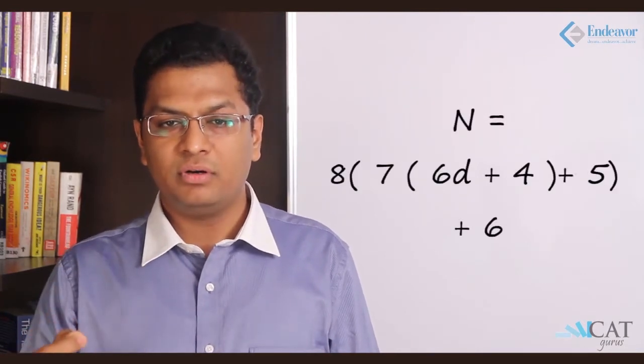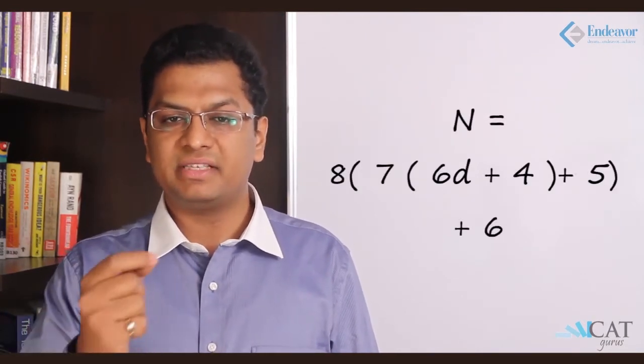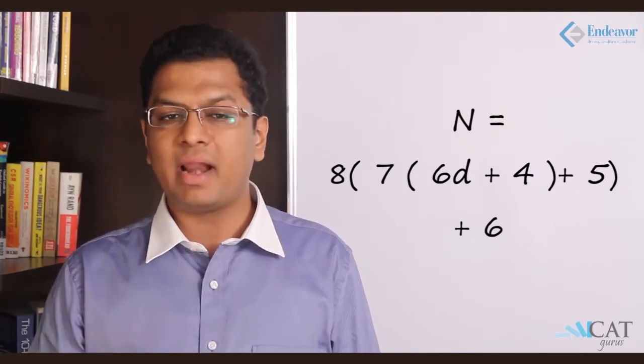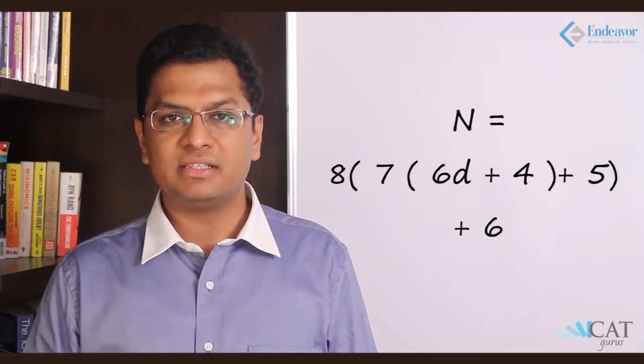6d plus 4 in brackets, then we have 7 into this bracket plus 5. Then we have 8 into the entire bracket plus 6. So this gives us the entire number.